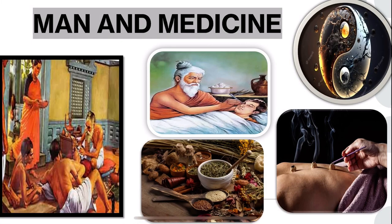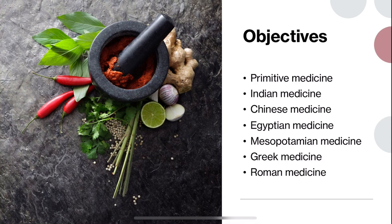Hello everyone. In this video we are going to discuss chapter 1 of Preventive and Social Medicine, i.e., Man and Medicine. The objectives of this session is to understand the various types of medicines practiced in ancient times: primitive medicine, Indian, Chinese, Egyptian, Mesopotamian, Greek and Roman.